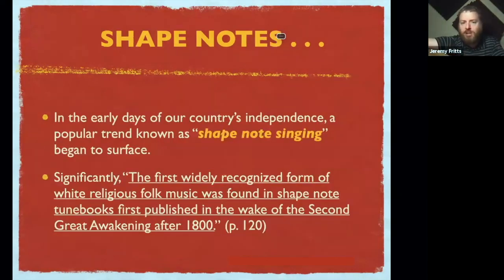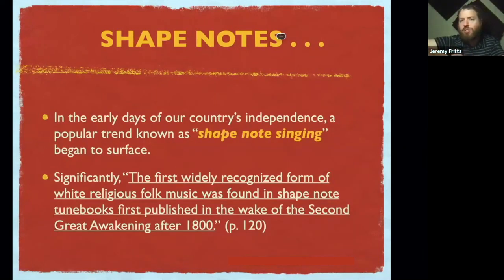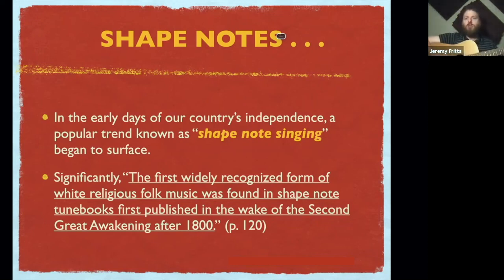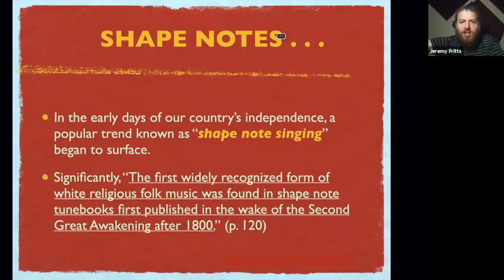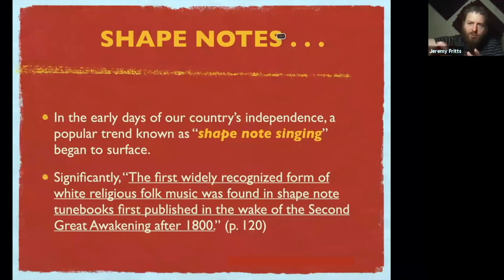Shape note singing basically refers to the idea that you have certain shapes that symbolize certain scale tones. If you've heard people sing the do-re-mi system, we're talking about a scale — a major scale built up of seven notes. It's interesting to note that the first widely recognized form of white religious folk music found in our country was found in the shape note tune books, which were first published in the wake of the Second Great Awakening.